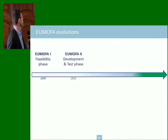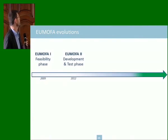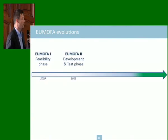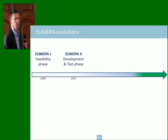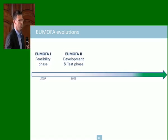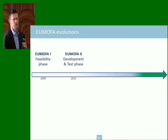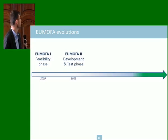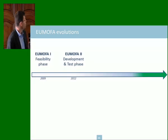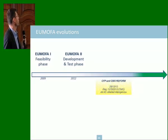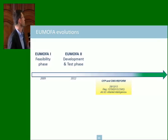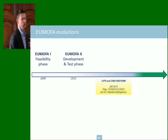It has been a long process — a feasibility study and development over the last five years. This time was needed because a lot of the work, and even the innovation, was in methodology and harmonization of codes, which required a huge amount of expertise and time. The critical moment was also the CFP and CMO reform, because then market intelligence became a new mandate of the Commission, and here we are now in a new phase of development.